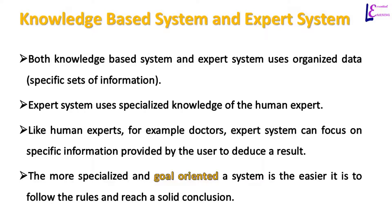Often, knowledge-based systems and expert systems are considered to be the same because both systems use organized data or a specific set of information. However, expert systems are more specific — they use specialized knowledge of human experts, meaning information in an expert system is related to only one area of expertise. Like human experts, for example doctors, expert systems can focus on specific information or symptoms of a disease provided by the user or patient to deduce a result.